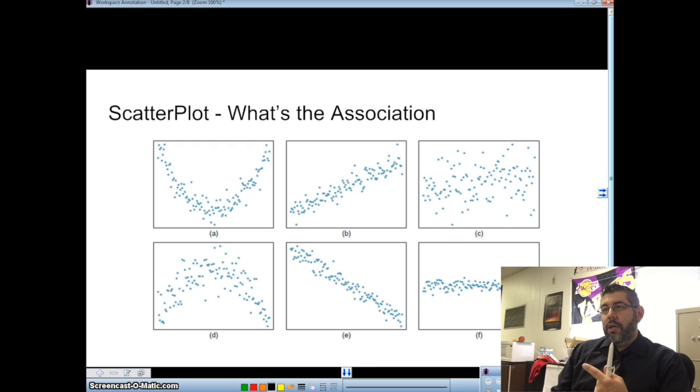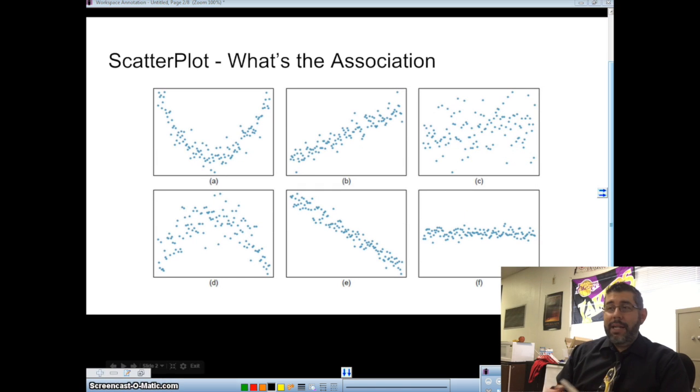So we're going to talk about scatter plots, association, looking at bivariate quantitative data, and just going through some basic terms with you. First off, I'm going to talk about what we have is called a scatter plot. A scatter plot is when we have two variables, and both variables are quantitative. So something like height and weight, or mass and speed.